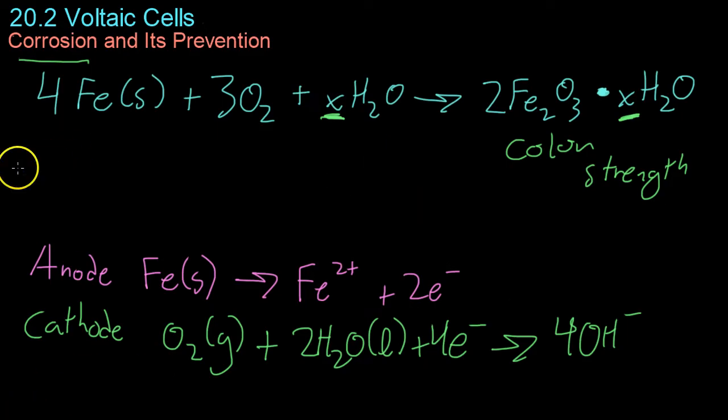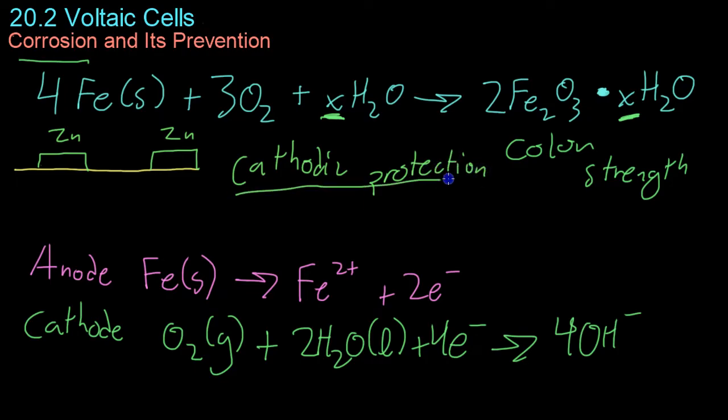To prevent this, people will often, if you have your metal bed of your truck or the bottom of a boat, add bars of zinc along the bottom to prevent this corrosion. This is called cathodic protection. In this case, the zinc, because it is more readily oxidized, will corrode first.